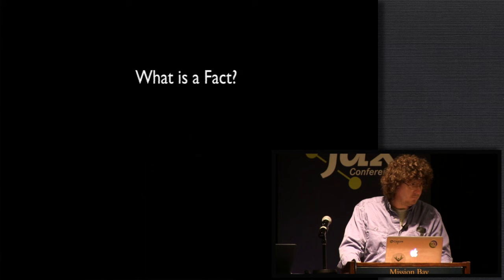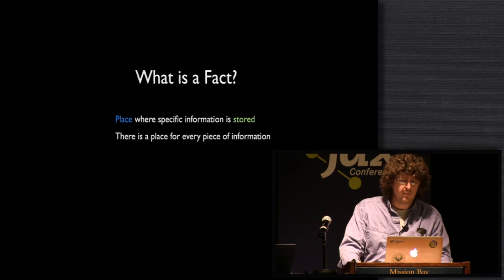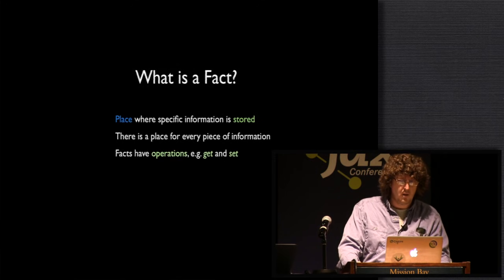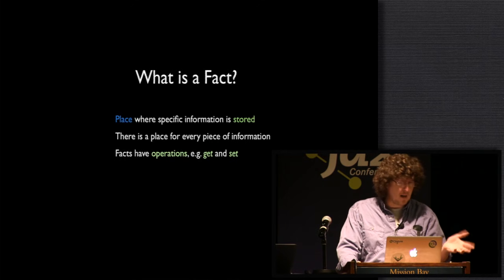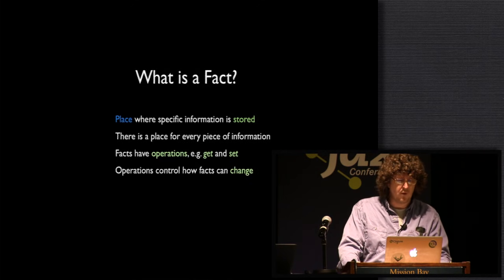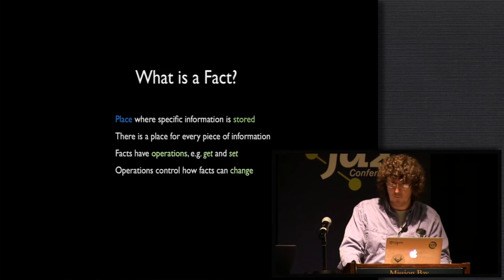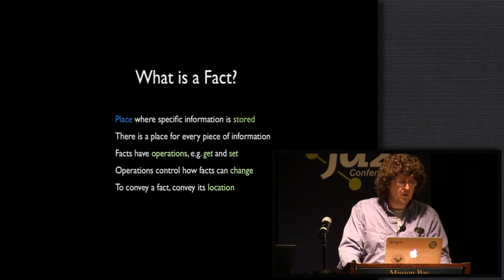So what's a fact? A fact is a place where information is stored. And what's great about that is there's a place for every piece of information. Facts have operations like get and set, and they may have other operations. Those operations control how facts can change. And to convey a fact, we just convey its location.